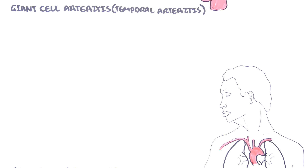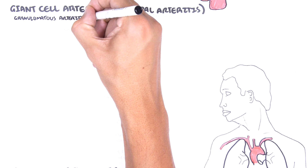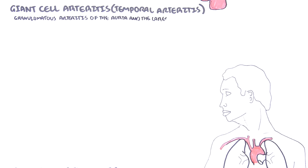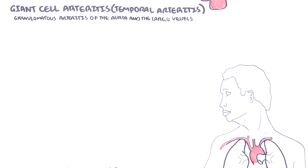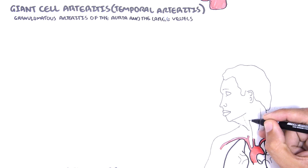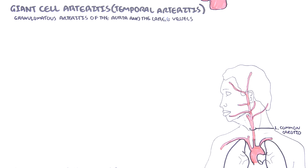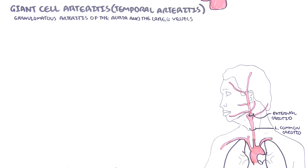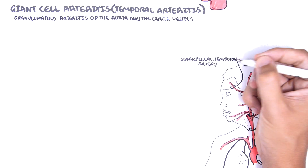Giant cell arteritis, also known as temporal arteritis, is defined as a granulomatous arteritis of the aorta and the large vessels. It typically affects the aorta and/or its major branches. Here is the left common carotid artery, a branch of the aorta. The common carotid then divides into the internal and external carotid arteries. The external carotid artery has many branches, including the superficial temporal artery.